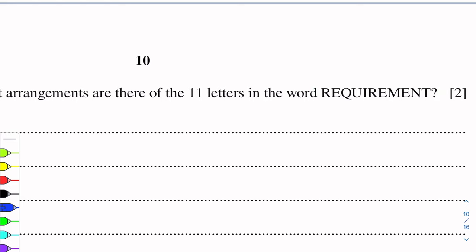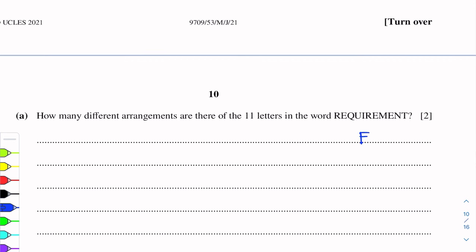Total is 11 letters. The repeated letters are: 3 E's are repeated, so we divide by 3 factorial. And 2 R's are repeated, so we divide by 2 factorial.